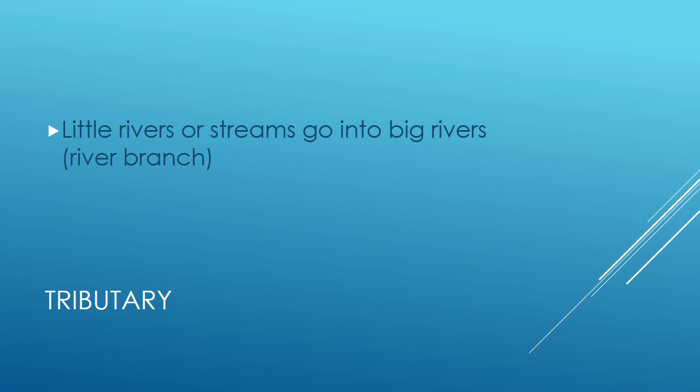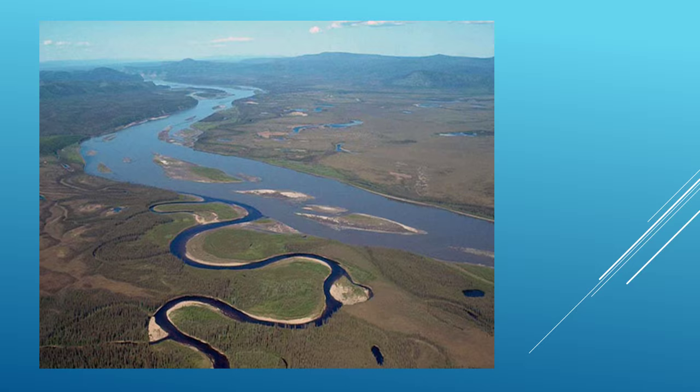A tributary is a small river or stream that flows into a larger river. It's a river branch. For example, Goose Creek runs into the larger Potomac River, and then all the rivers running eastward, including the Potomac River, flow into the Chesapeake Bay.